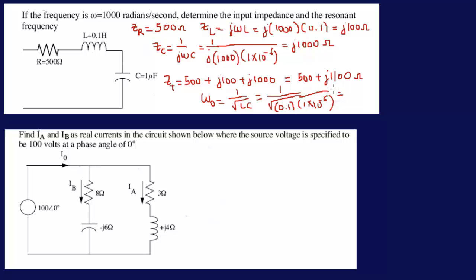So whatever that answer gives you is omega zero. Now looking at problem number two here, find IA and IB, the currents here. I have a voltage here and a parallel circuit.